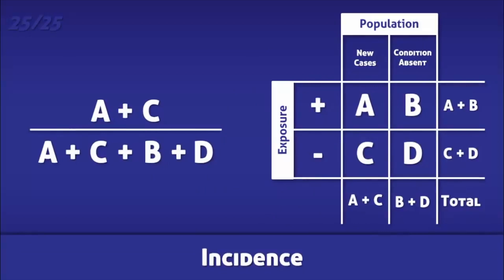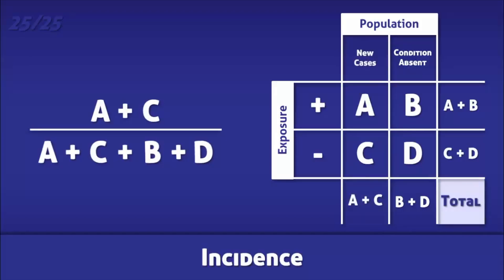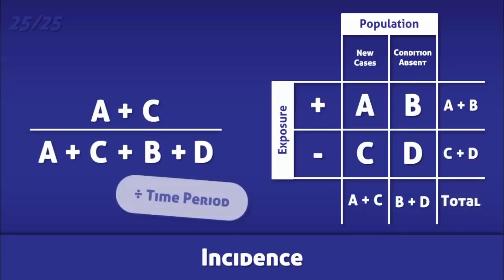Incidence is the proportion of the population that develop a condition during a specified period of time. It is calculated by dividing the total number of new cases by the total number of susceptible people in the population, then adjusting by dividing by the length of the time period.